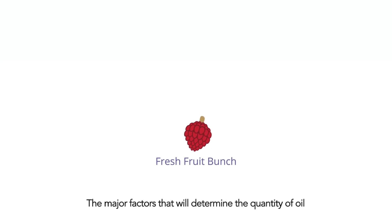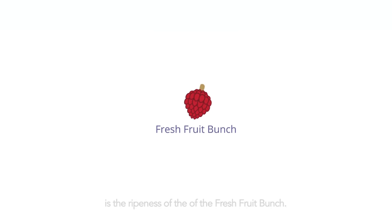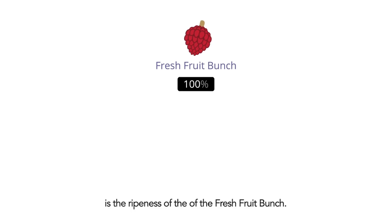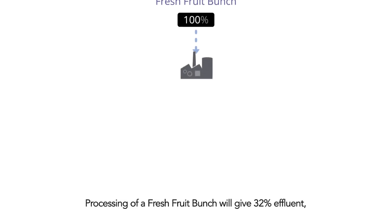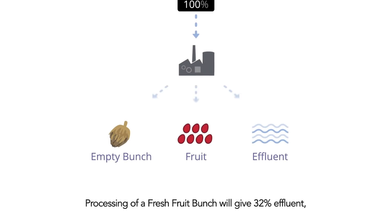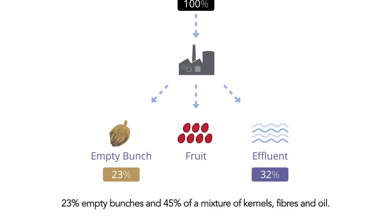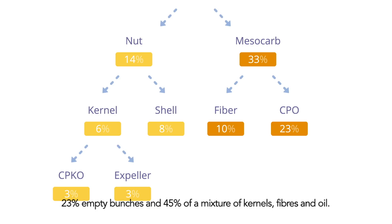The major factor that will determine the quantity of oil is the ripeness of the fresh fruit bunch. Processing of a fresh fruit bunch will give 32% effluent, 23% empty bunches, and 45% of a mixture of kernels, fibres and oil.